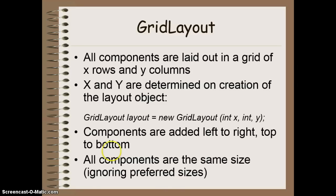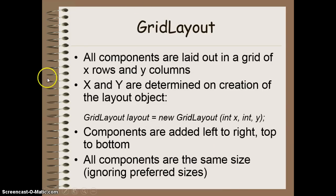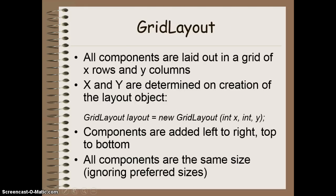With Grid Layout, components are ordered from left to right, top to bottom. You can't place a component in one corner first and then go back to fill in another position. You have to add them in the exact order you want them to appear in your grid, so keep that in mind when adding your components.